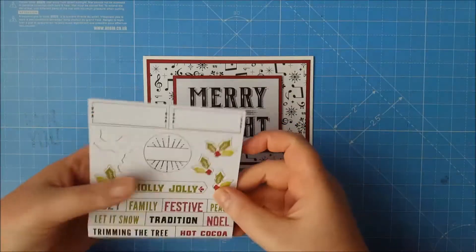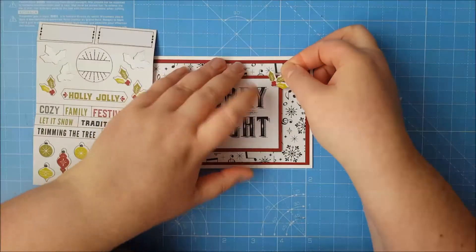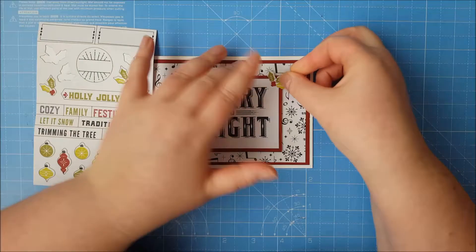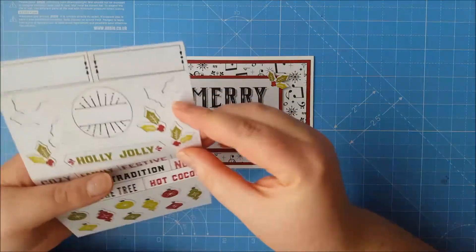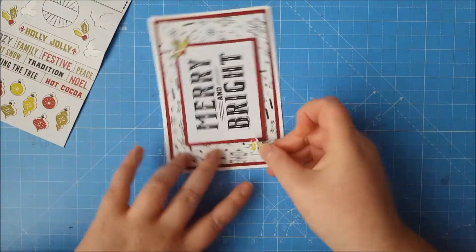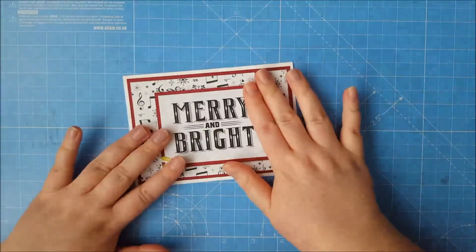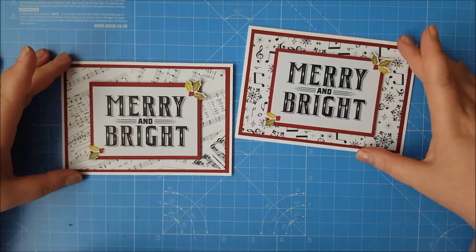And then bringing in the stickers. So we're going to put this, if I can get it off, this holly on the edge there. And then this one, I'm going to put on the bottom there. And that is our card for today.